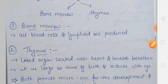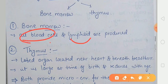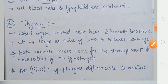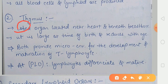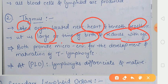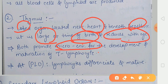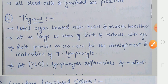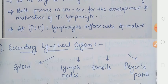Jo bone marrow hai, wahan pe kya hota hai? Jitni bhi jo blood cells hongi, aur jo lymphocytes honge, voh yahan produce honge. Jo doosri hai, voh hai thymus. Thymus kya hai? Ek lobbed organ hai, jo ki hamare heart ke paas mein aur breast bone ke neeche maujood hota hai. Yeh jab birth hota hai child ka toh us time thymus ka size kaafi bada hota hai, par yeh age ke saath dheere-dheere reduce hone lagta hai. Yeh dono hi, yaani ki bone marrow and thymus, aisa micro environment produce karwate hain, jiske andar jo T lymphocytes hain voh develop bhi ho sakti hain aur maturation bhi inka ho sakta hai. Jo primary lymphoid organs hai, wahan pe lymphocytes differentiate bhi hoti hain aur mature bhi hoti hain, aur uske baad secondary lymphoid organs ke andar migrate kar jaati hain.